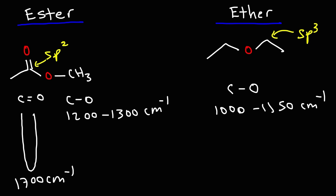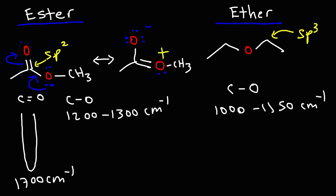The reason for that is the resonance that can form here. Taking this lone pair, we form a pi bond and break this pi bond to draw the resonance structure of the ester. We can see that the sp2 CO stretch of the ester has more double bond character than the sp3 CO stretch of the ether due to resonance.